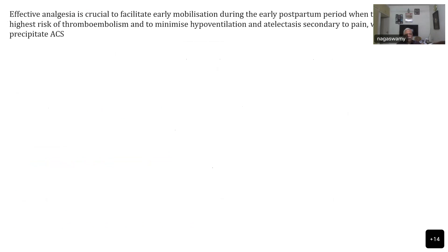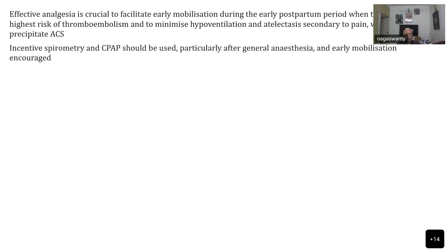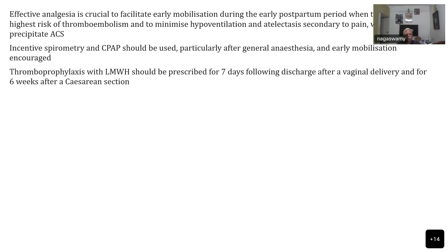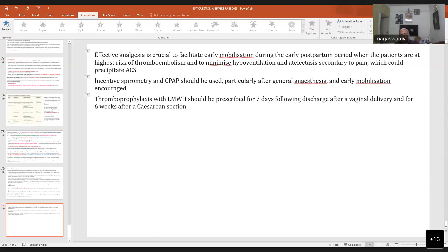Effective analgesia is crucial for early mobilization during the early postpartum period, as patients are at risk of thromboembolic complications. Also minimize hypoventilation and atelectasis secondary to pain, which could precipitate acute chest syndrome. Incentive spirometry and CPAP can be used, particularly after general anaesthesia, and early mobilization is encouraged. Thromboprophylaxis with low molecular weight heparin should be given for 7 days following vaginal delivery and for 6 weeks following caesarean section.